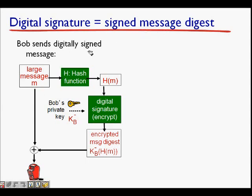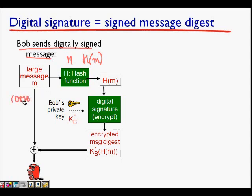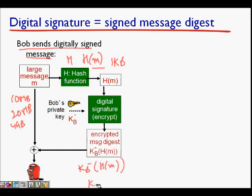Now let's see digital signature with a signed message digest. Bob sends a digitally signed message. There is a large message — a huge message he writes to Alice. He applies a hash function, and this hash of the message produces a fixed-size signature. Whatever the size of the message — 10 MB, 20 MB, 4 GB — it will produce the same fixed size of message digest, say 1 KB. Then Bob encrypts this with KB-minus: KB-minus(H(M)), and sends the large message along with this.